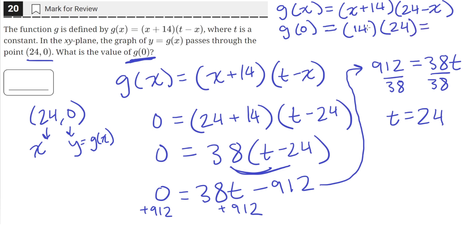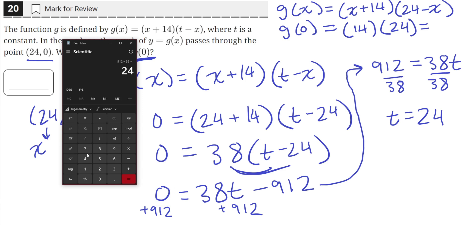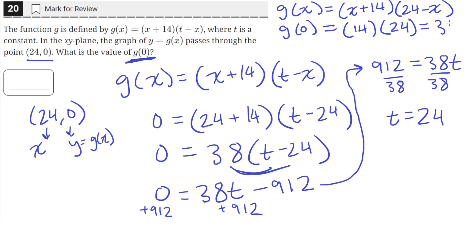So we're just left with 14 times 24. And 14 times 24 is just equal to 336. The value of g(0) is 336.